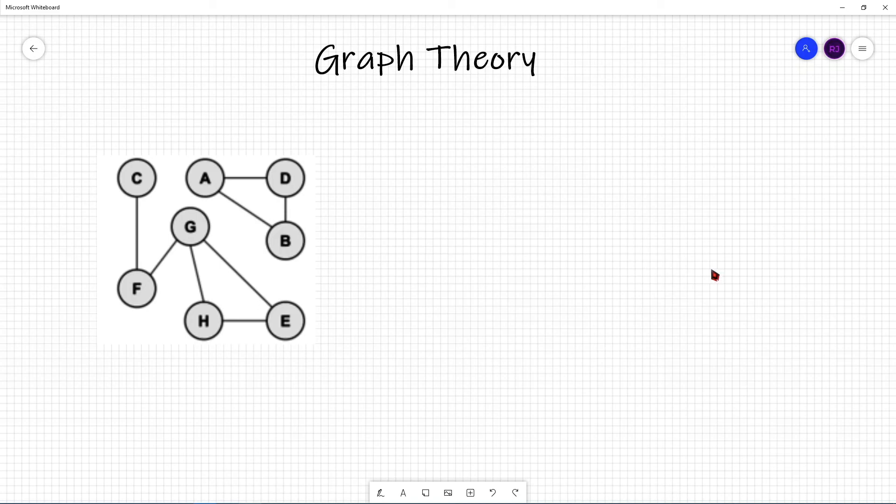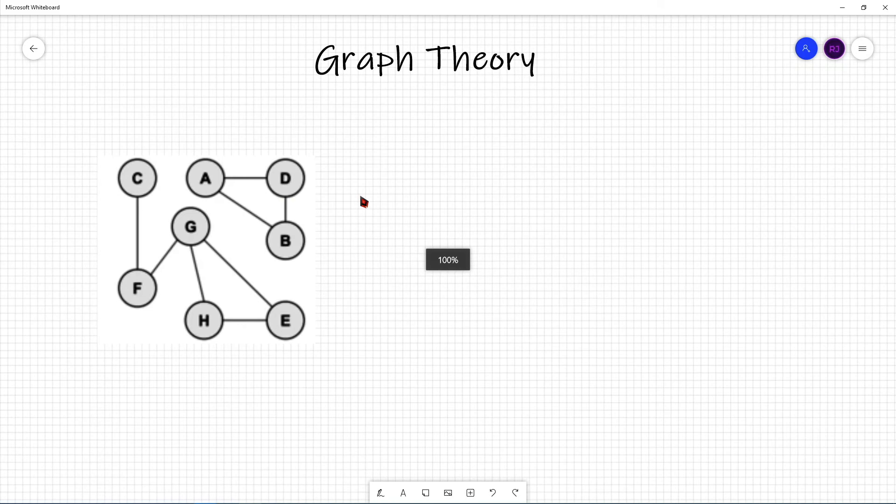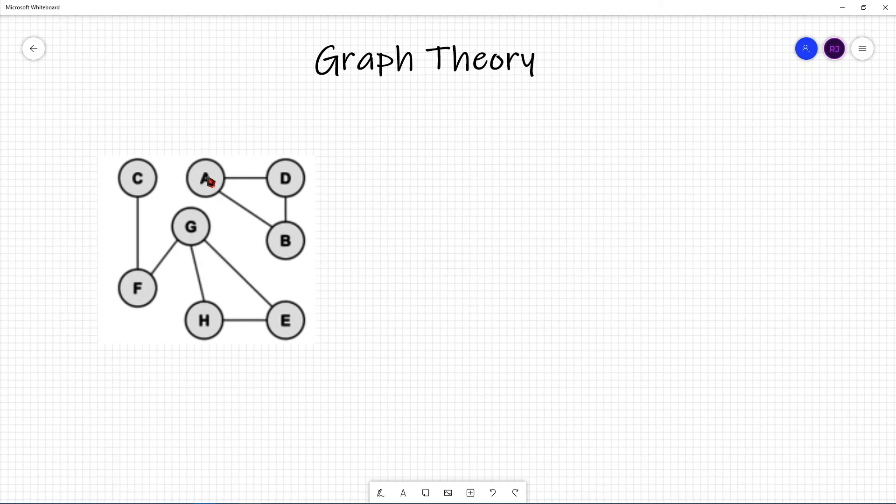A graph is a collection of vertices and edges. An edge is a connection between two vertices. Vertices are also known as nodes, but an edge is the line between them which connects two vertices or nodes. And one can draw a graph by marking points for the vertices and then drawing lines connecting the different points.